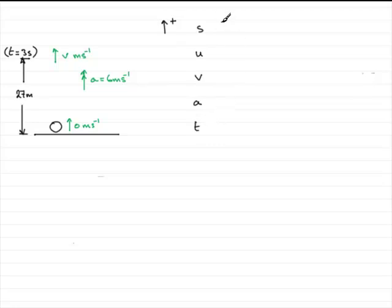And what have we got? We've got S being 27 meters, U is zero, V we want, the acceleration is six meters per second squared, and the time was three seconds.